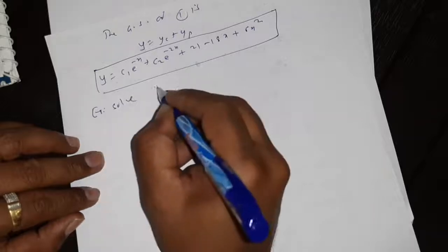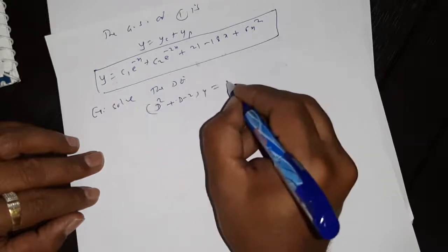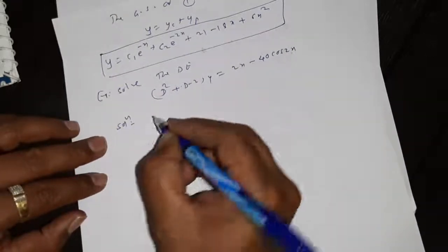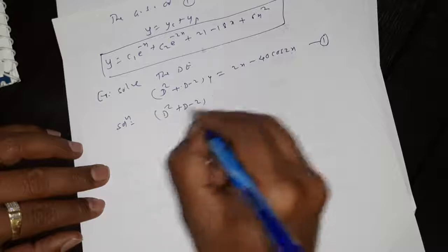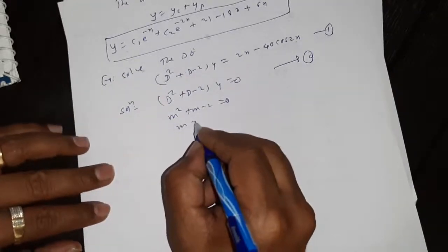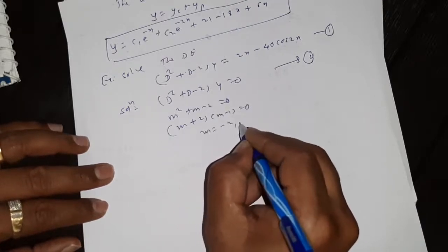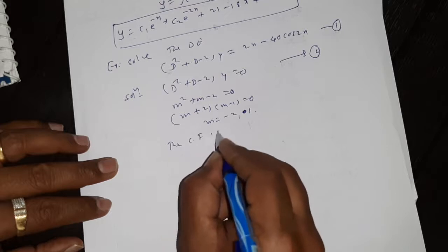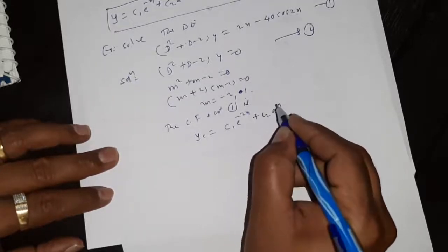Next example: solve the differential equation D² + D − 2y equal to 2x − 40cos(2x). Write first the associated homogeneous differential equation. The auxiliary equation is m² + m − 2 equal to 0, so (m+2)(m−1) equal to 0, giving roots m equal to minus 2 and plus 1. The complementary function is yc equal to c1·e^(−2x) + c2·e^x.